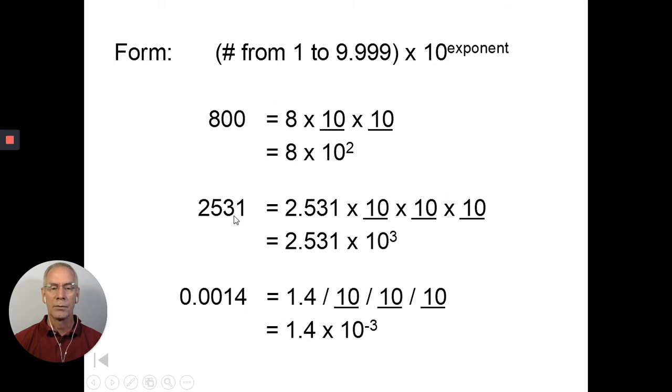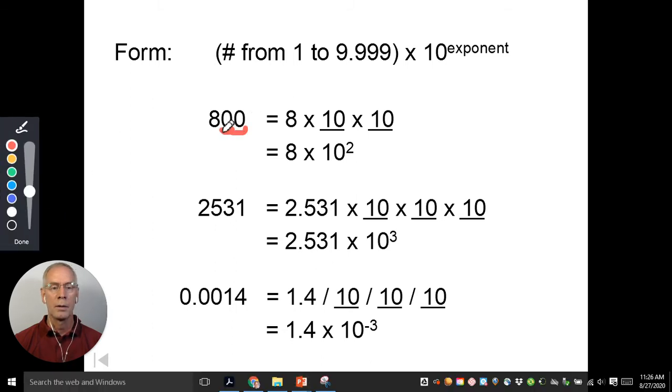The other way to look at it is, if we start up here at 800, here was the understood decimal. We have to move one, two places to get over there. And that's why we have a 2. If we go down here to the next one, we started here, we have to move one, two, three places. So 10 to the third power.